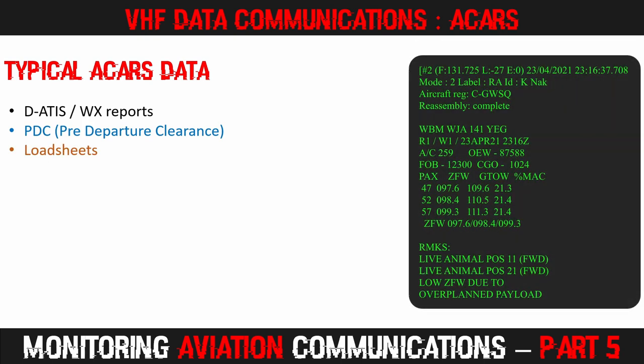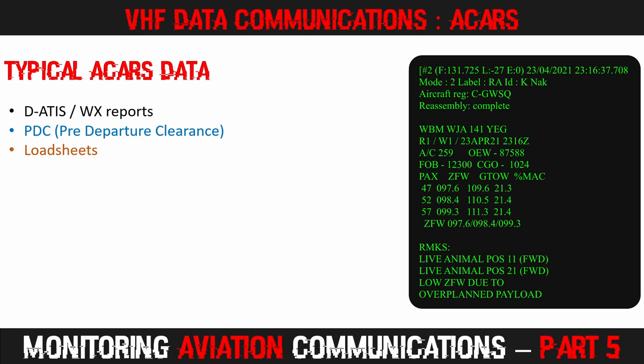Load sheets are also transmitted to the crew as the flight is prepared for departure. Typically the airline dispatch sends the final passenger numbers, weight, centre of gravity, and fuel calculations, which can be used to set the flaps, trim, and V-speeds. Sometimes you will see the V-speeds being sent to the aircraft as well. In this example we can see there are two live animals on board the aircraft. We can see the aircraft will have a low zero fuel weight — that's the weight of the aircraft before the fuel is added. The pilots can expect the aircraft to require less runway than usual, and that the plane will climb faster than normal, owing to the lighter than average load.